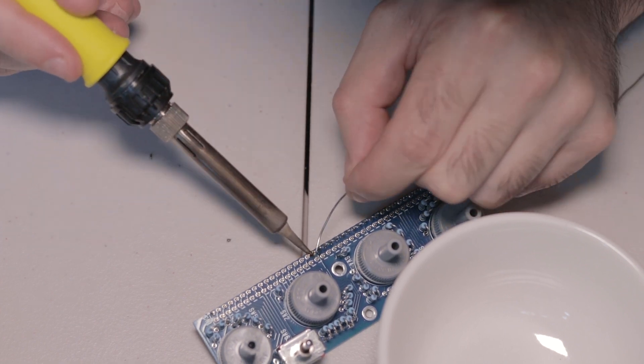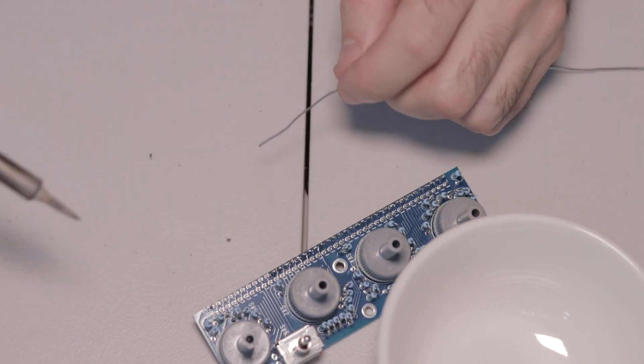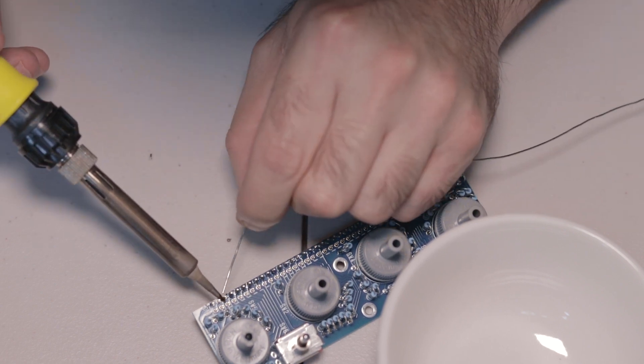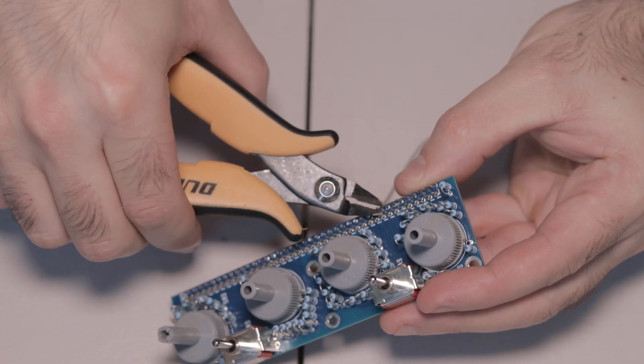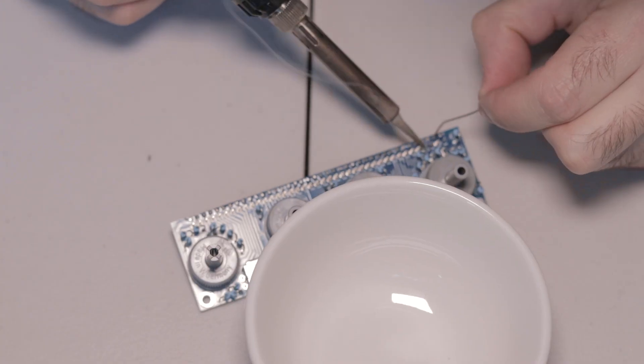And then once you've done the external row, you can cut all of those soldered pins nice and flush to the board. You need to make sure you get them really nice and close to the board when you cut them.